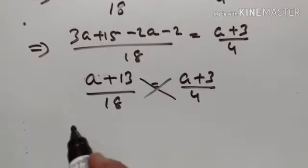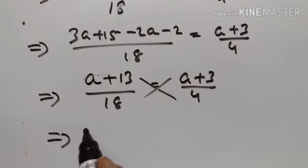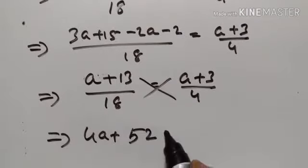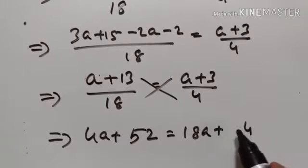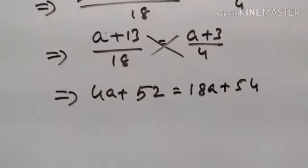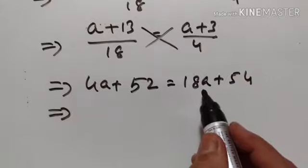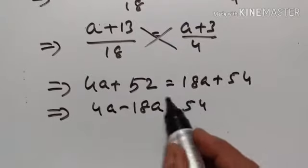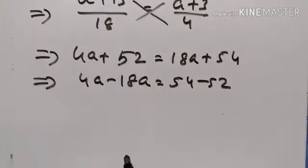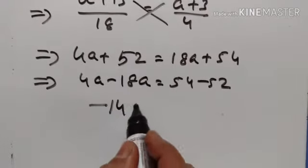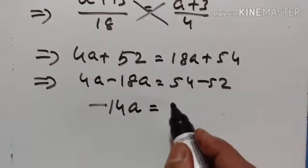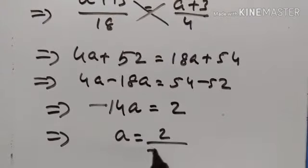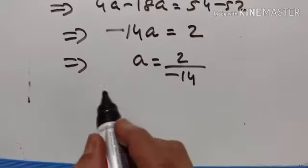Let us cross multiply. 4 into a plus 13 gives 4a plus 52, is equal to 18 into a plus 3 gives 18a plus 54. Rearranging: 4a minus 18a is equal to 54 minus 52. 4a minus 18a equals minus 14a, and 54 minus 52 equals 2.